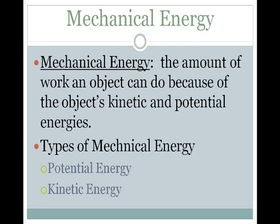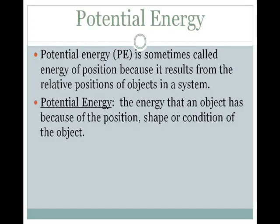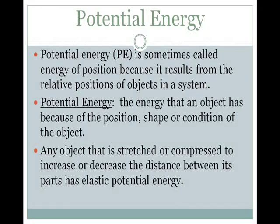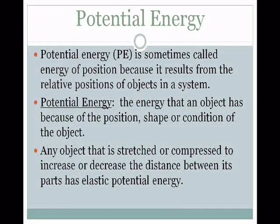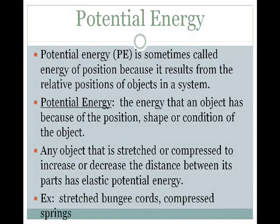Potential energy is sometimes called energy of position because it results from the relative positions of objects in a system. Potential energy is the energy that an object has because of the position, shape, or condition of the object. Any object that is stretched or compressed to increase or decrease the distance between its parts has elastic potential energy. An example of that would be a rubber band — when you stretch it out to increase the distance between its parts, it has more elastic potential energy. Another example would be bungee cords.